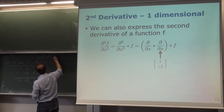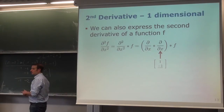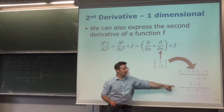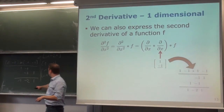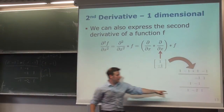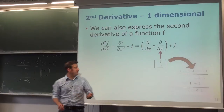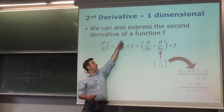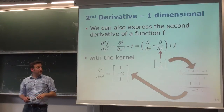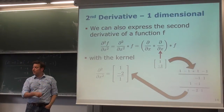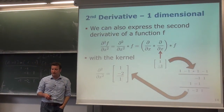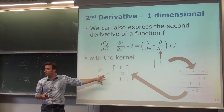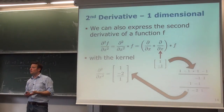The result of this convolution is the kernel [1, −2, 1]. So the second derivative can be expressed as a single kernel function: by convolving the input image f with [1, −2, 1] we directly obtain the second derivative. This works for a 1D signal using this simple three-element convolution kernel.